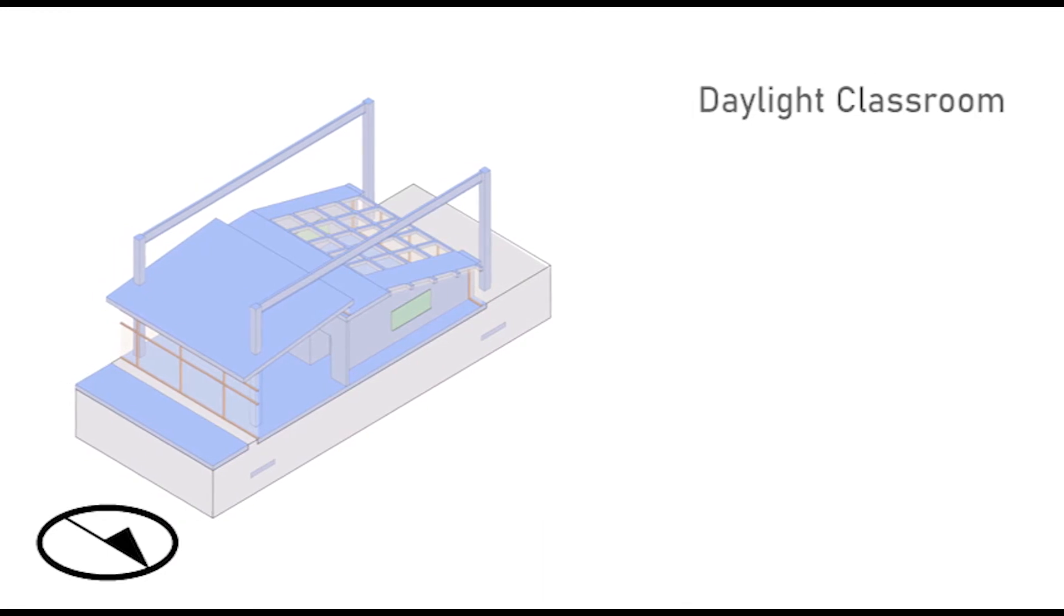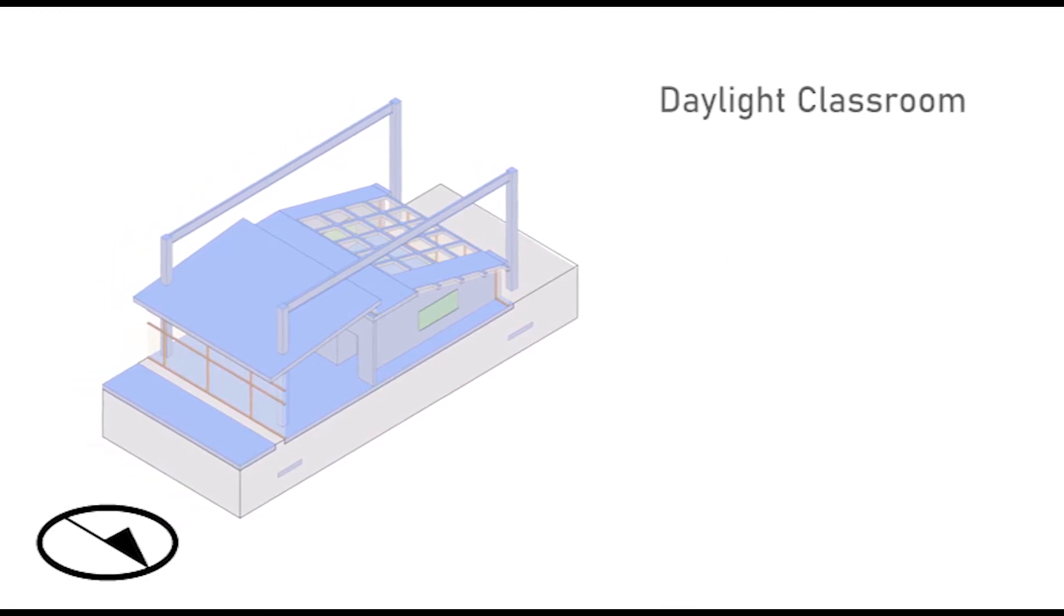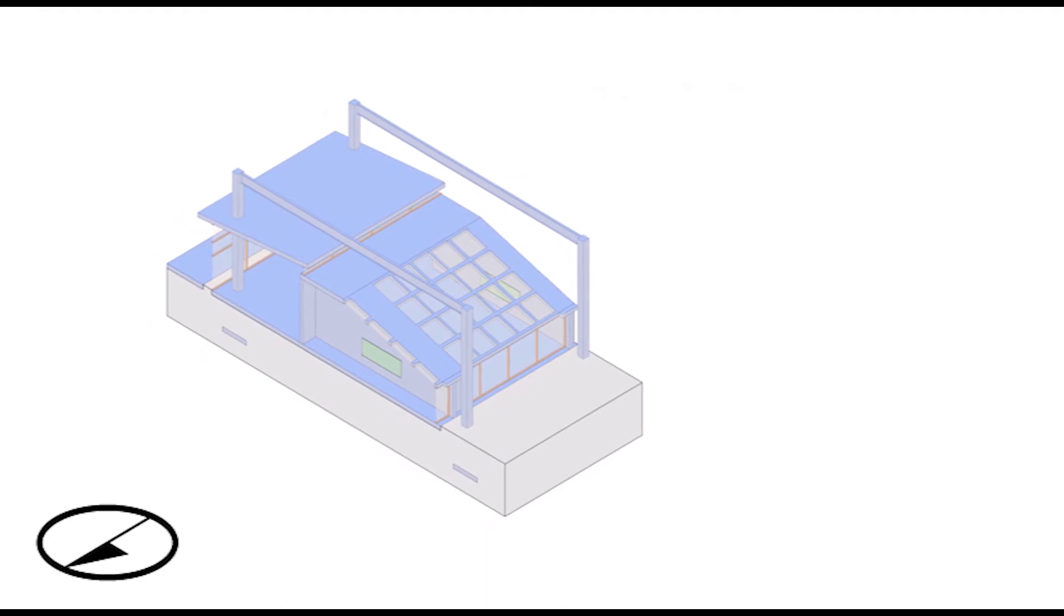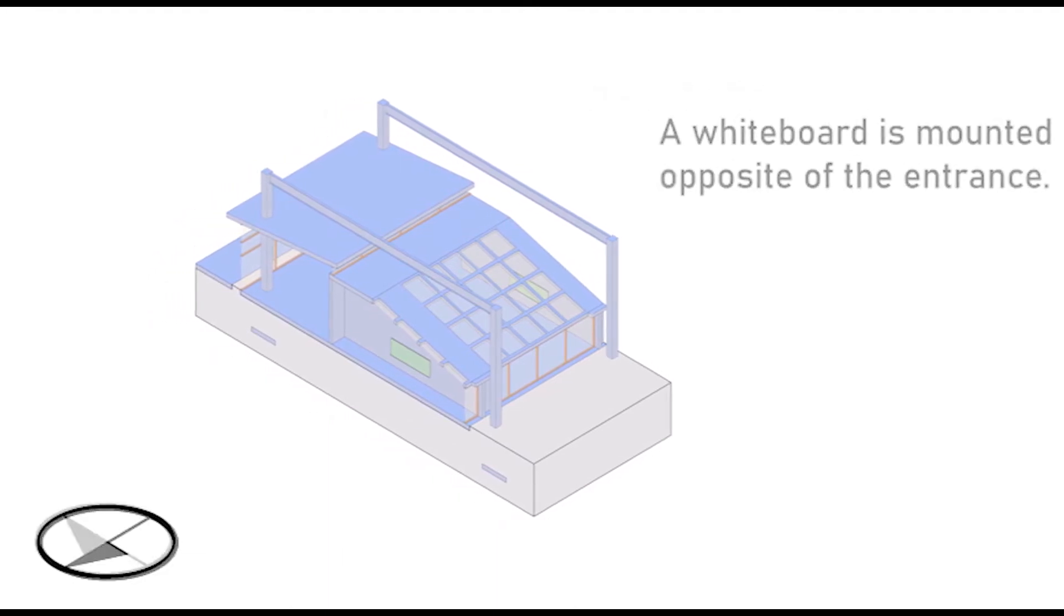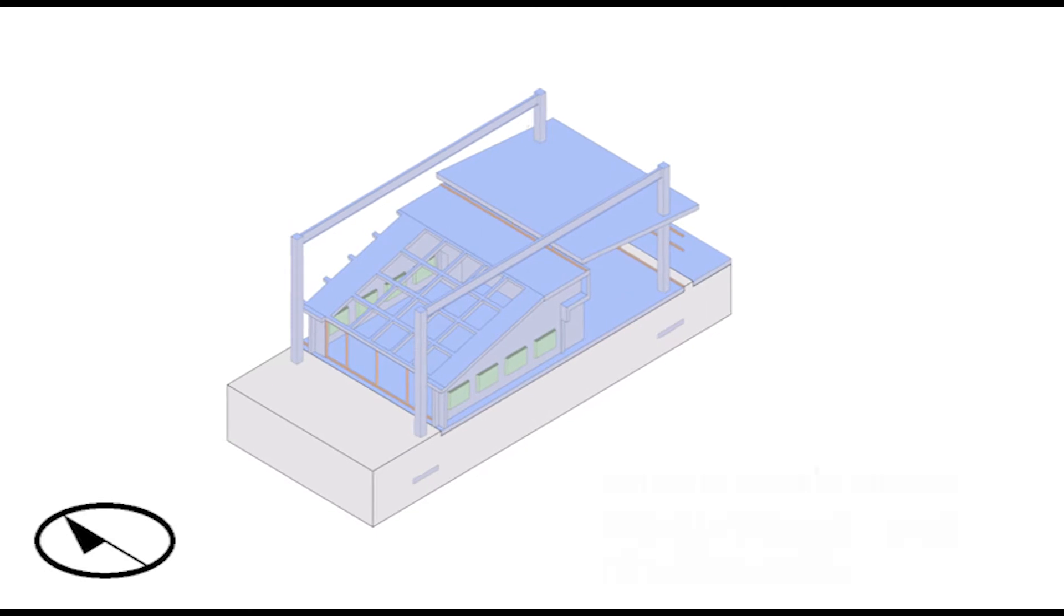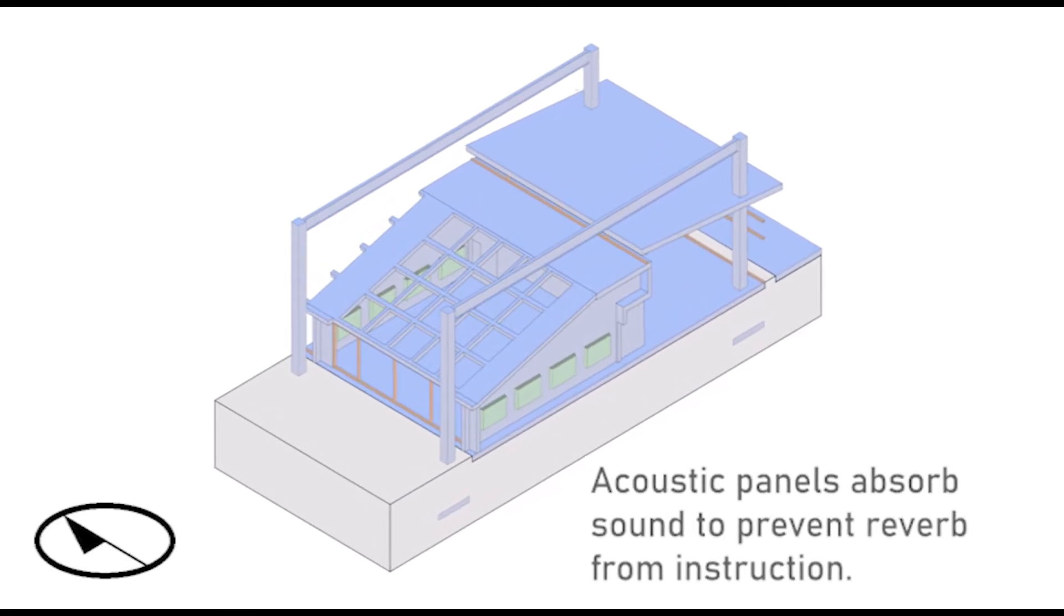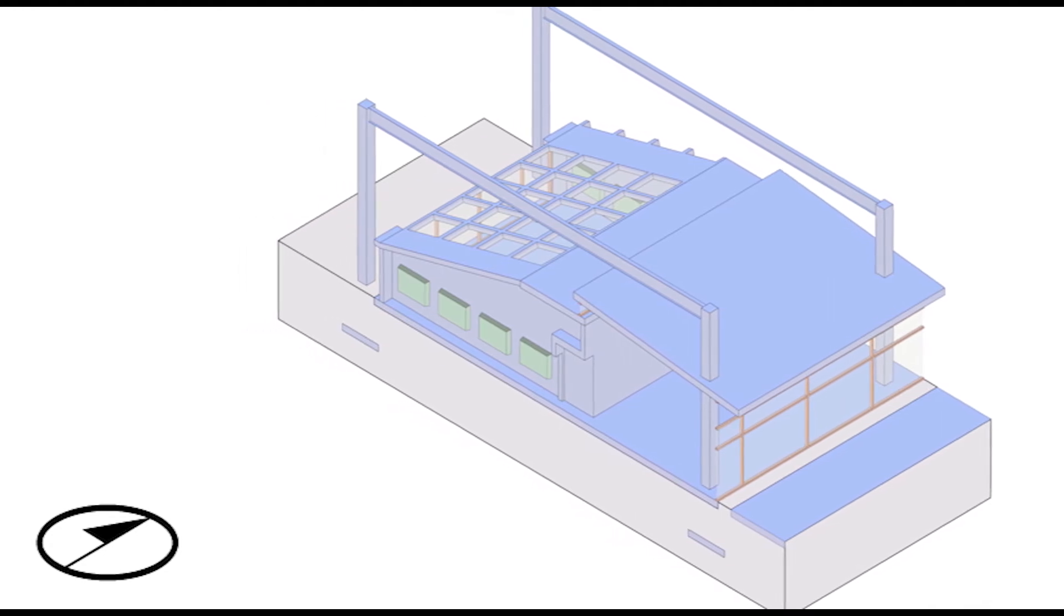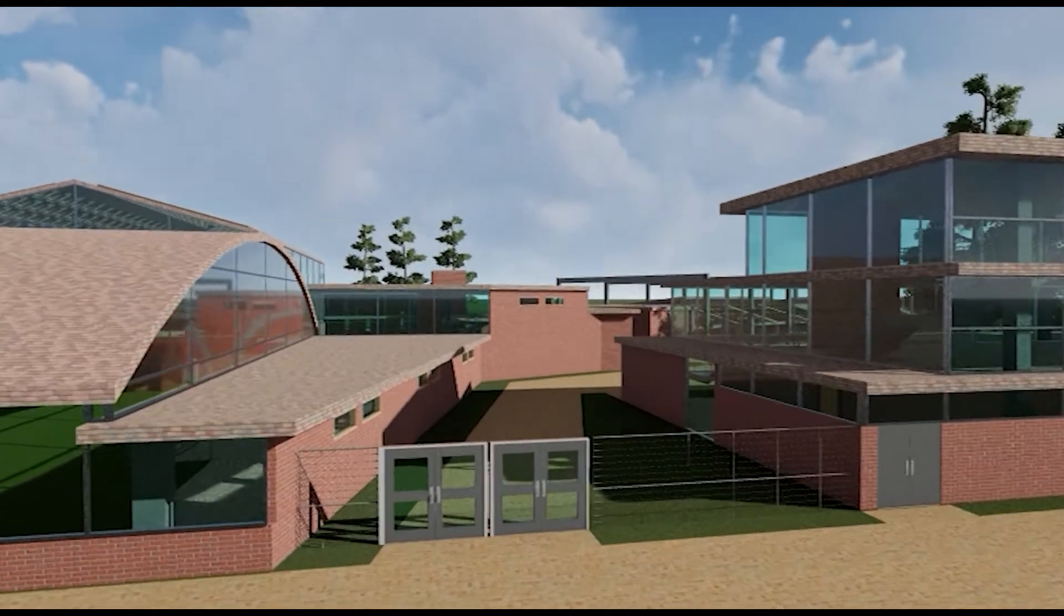The daylight classrooms are designed to provide ample daylight filtered through the sunshade. As the quality of the daylight shifts and changes throughout the school day, students will have a better ability to focus on their studies. Center pivoting glass doors allow for an elevated learning environment by further connecting the classroom to the natural courtyard.